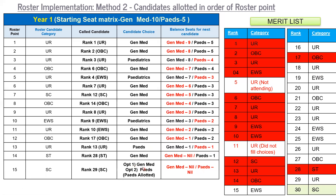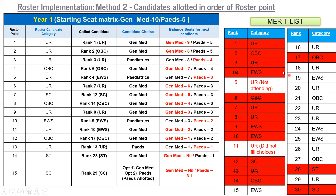Rank 30 first chooses general medicine, but no general medicine seats are available. There is one pediatric seat remaining, and since seats have no category tag, SC can opt for it without restriction — rank 30 is allotted the pediatric seat. All 15 seats are now allotted. You will see that certain candidates with ranks above some allotted candidates were not allotted, because allotment follows roster point category order. A similar outcome would occur with the seat-categorization model, though the exact results may differ.